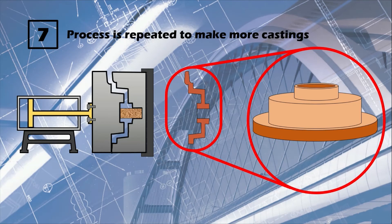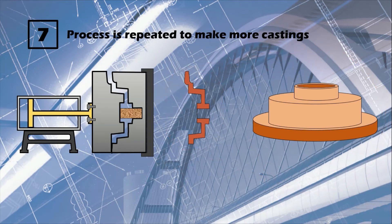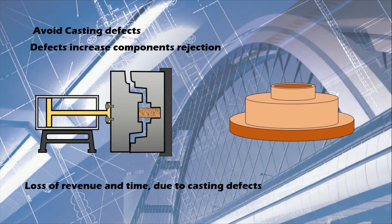Whenever a manufacturing process involves casting, we need to avoid casting defects as far as possible; otherwise, the complete work in producing a part will be wasted. The resources wasted if the casting is defective include electricity, fuel used to melt metal in the furnace, labor cost, raw material cost, and many more. So it is necessary to take precautions while producing the part.